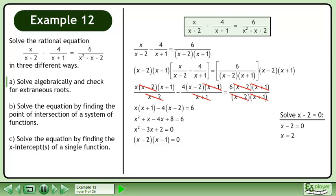Set the first factor equal to 0 and solve for x. We get x equals 2. Set the second factor equal to 0 and solve for x. We get x equals 1. The roots of the equation are x equals 1 and 2.